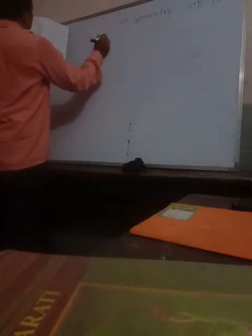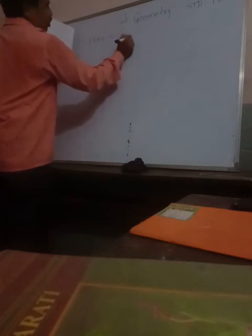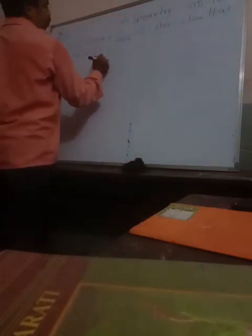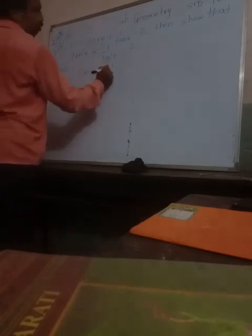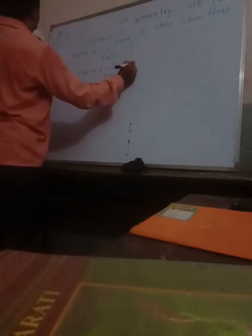If tan theta plus 1 upon tan theta is equal to 2, then show that tan squared theta plus 1 upon tan squared theta is equal to 2. How to prove this? What is given: tan θ + 1/tan θ = 2. We want the squared version. This is solved by squaring both sides.